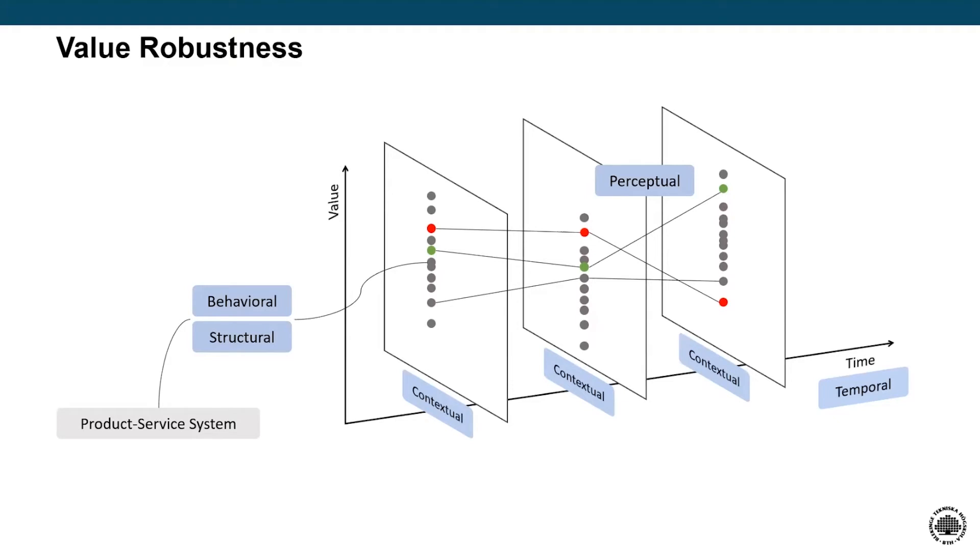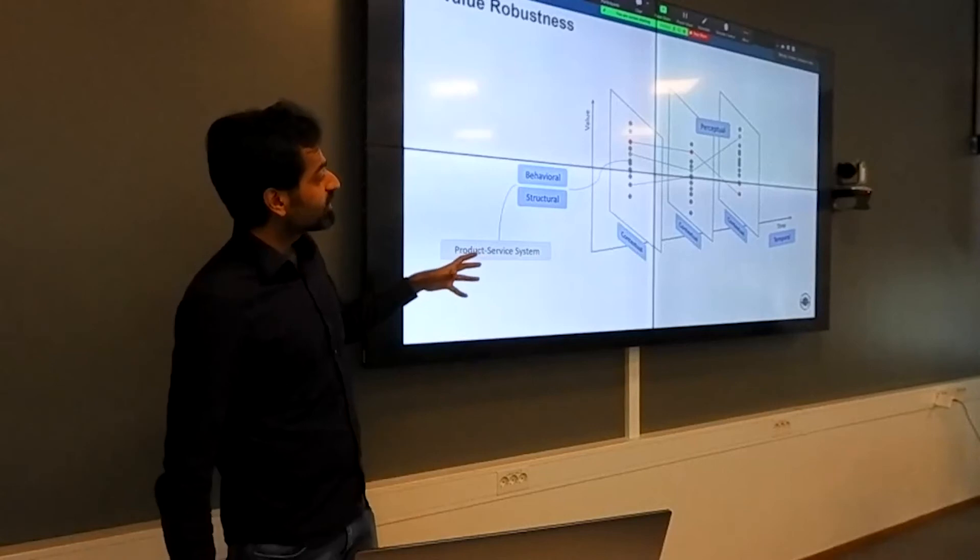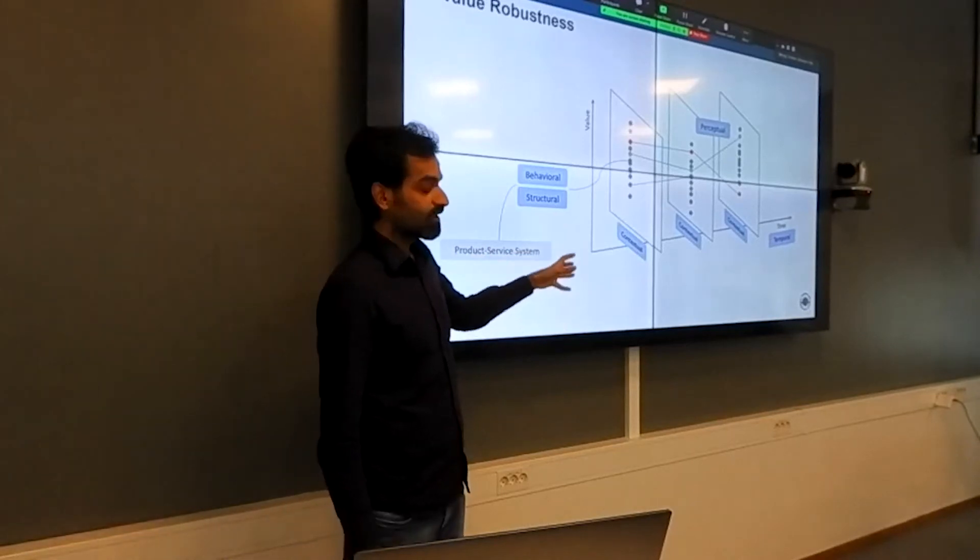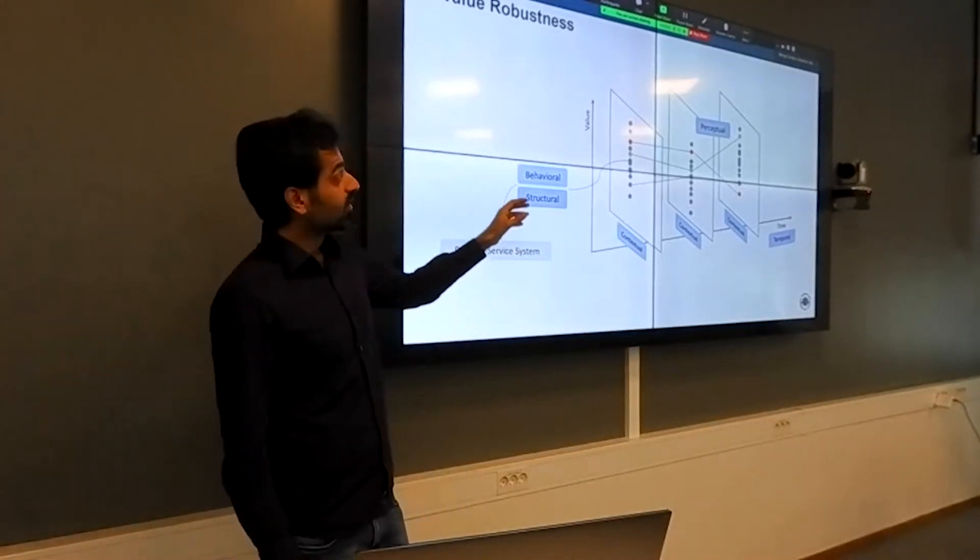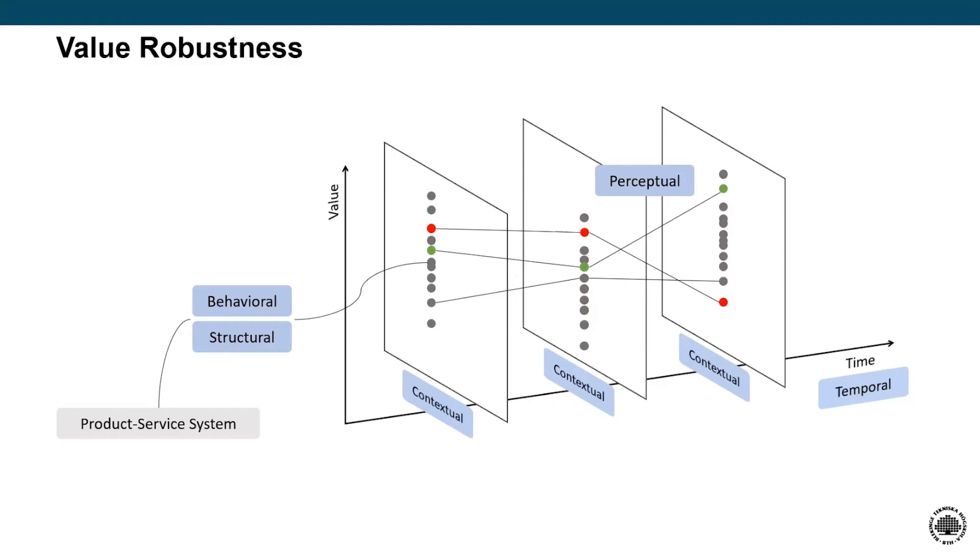This picture also again explains the same thing but in a different way. If you see that when we design a value for one given system for one given context, the system that may have the best value in the initial phase, the red dot, may not be the one that has the most value as time passes. So these are all intricate decisions that we need to make to assess our system and hence our design in the design state.